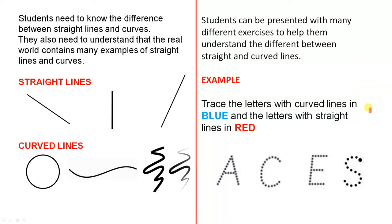Here's a simple example. Trace the letters with curved lines in blue and the letters with straight lines in red.